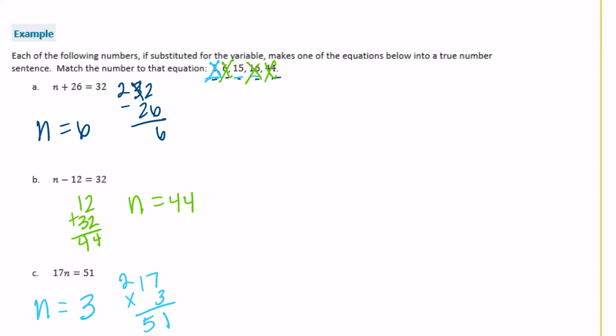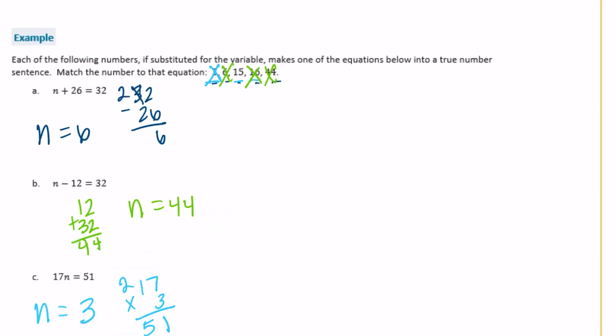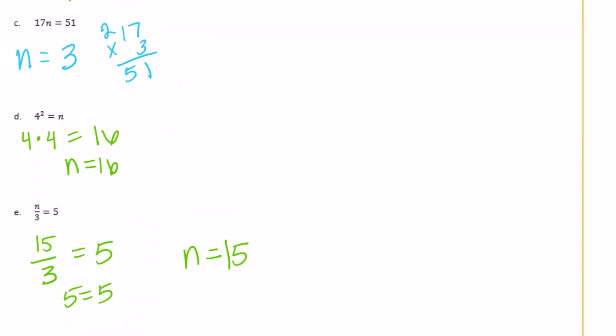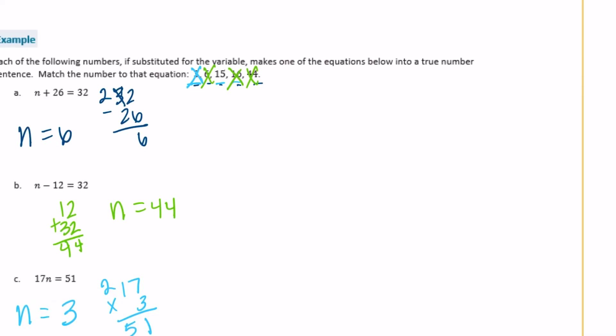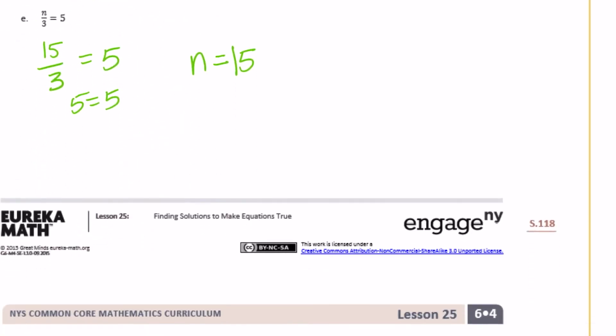Now the last one should be 15 because that's all we have left. Let's just make sure it works. So 15 over 3 should be equal to 5. Is 15 divided by 3 equal to 5? Yes, it is. So here N is equal to 15. Not just 5. And that is all for this lesson.